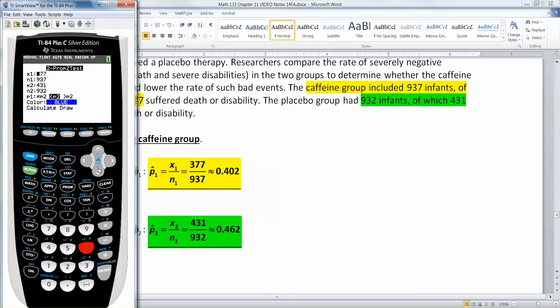X1 is 377. N1 was 937. X2 is 431. N2 is 932. And then you got to be careful, but you wanted a left-tailed one on this particular example, so you went with the middle one. Then you go down to calculate and press enter.